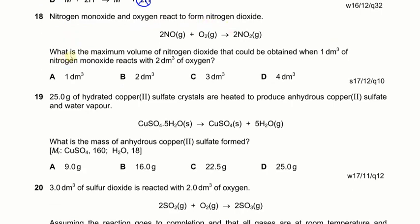Next question: what is the maximum volume of nitrogen that could be obtained when 1 dm³ of nitrogen monoxide reacts? According to the equation, the mole ratio is 1:1, so 1 dm³ of NO gives 1 dm³ of N₂.